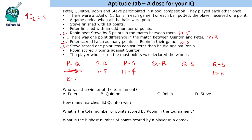Robin scored 7 points against Quinton, so Quinton scored 8 in that match. We still have the Quinton vs Steve match remaining. Using the clue that Steve finished with 18 points total — he has 5 and 4 already, totalling 9 — Steve must score 9 in this game and Quinton gets 6.